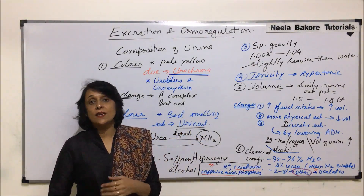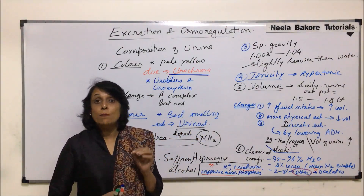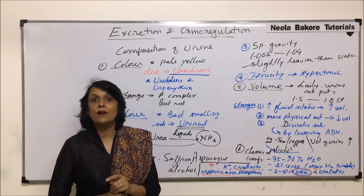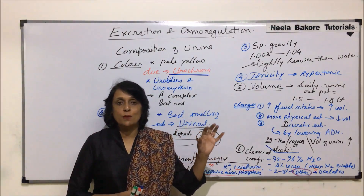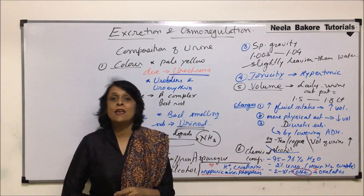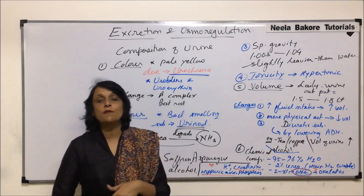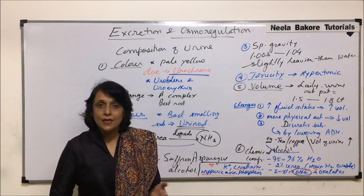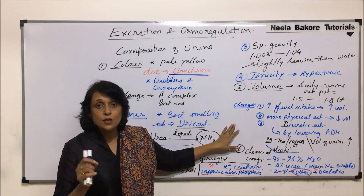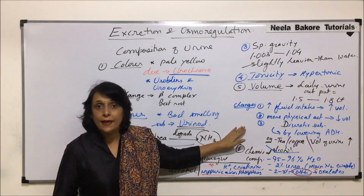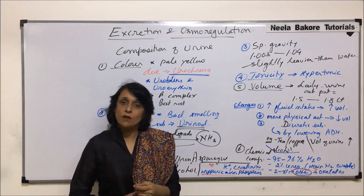Now there are certain cases and situations when certain abnormal things are also detected in urine. Based on those abnormal substances found, we give certain terms to those abnormalities. In the next part we will take up certain abnormalities — substances which are not normally present in urine but if they are found, that is an abnormal situation.